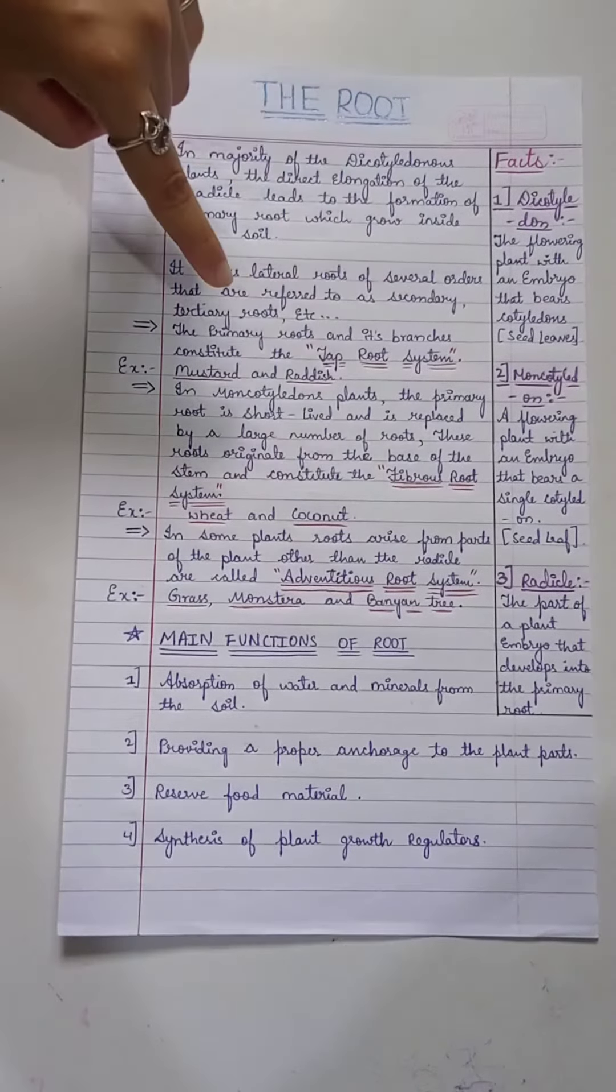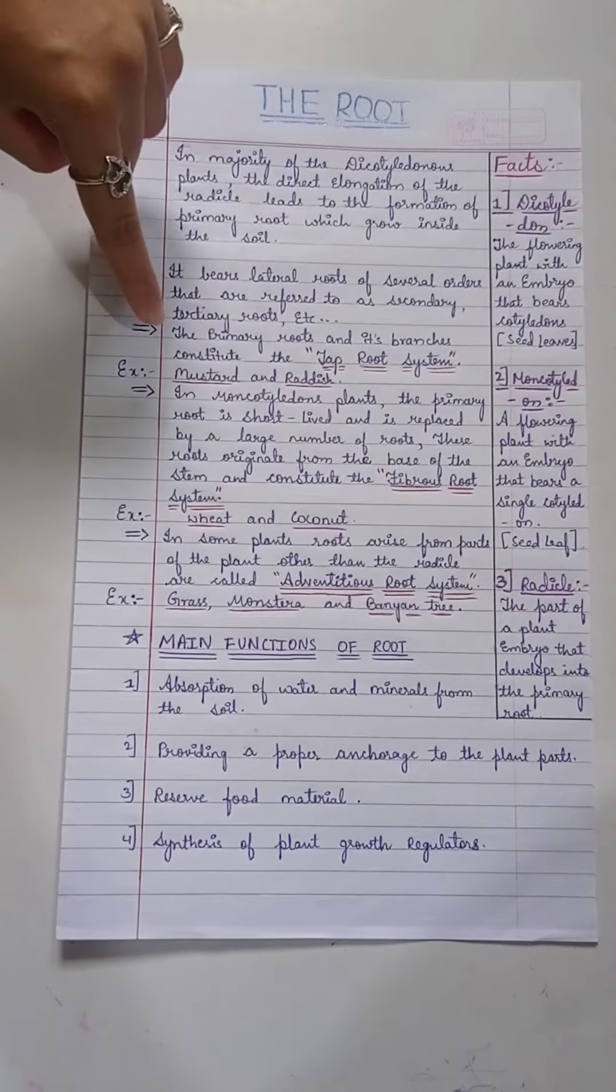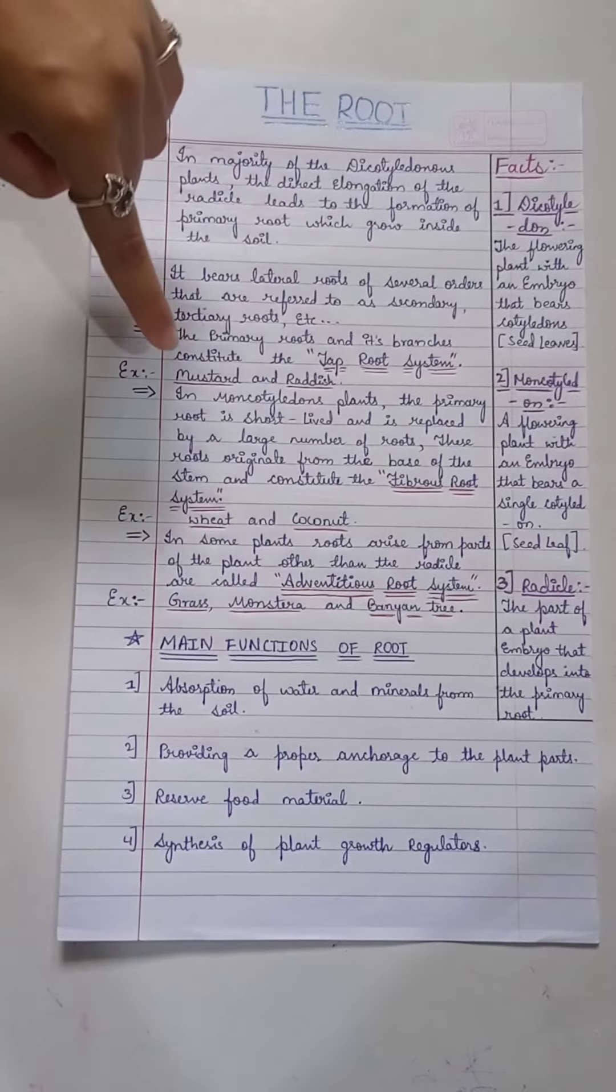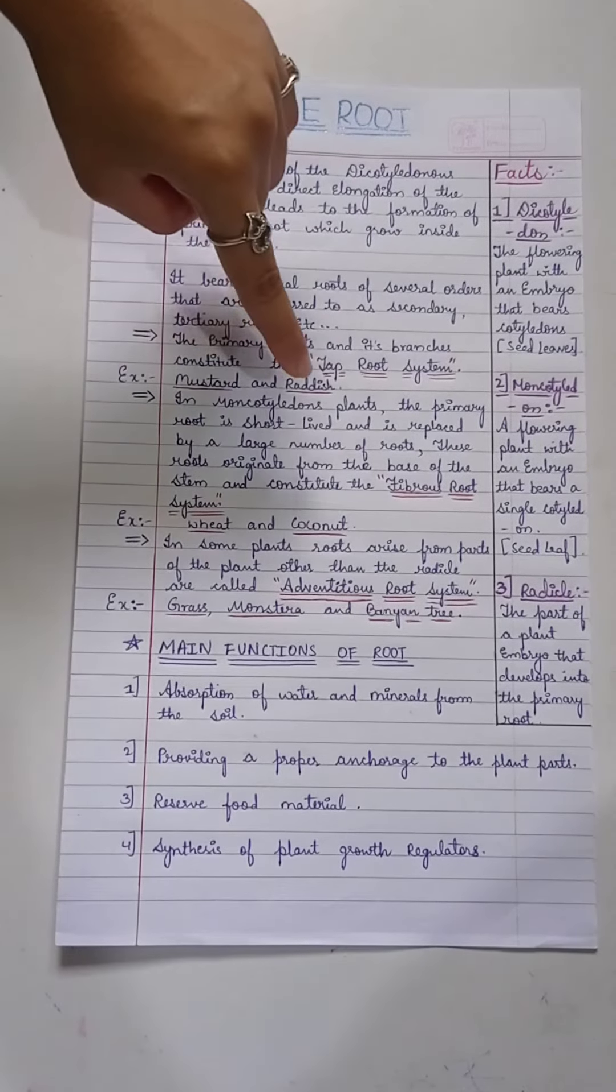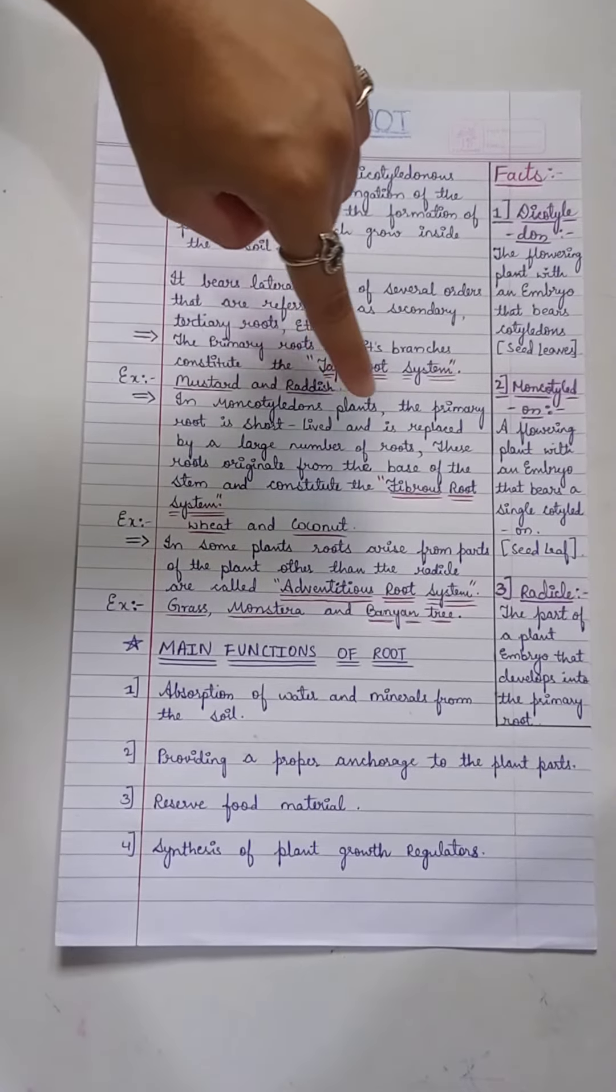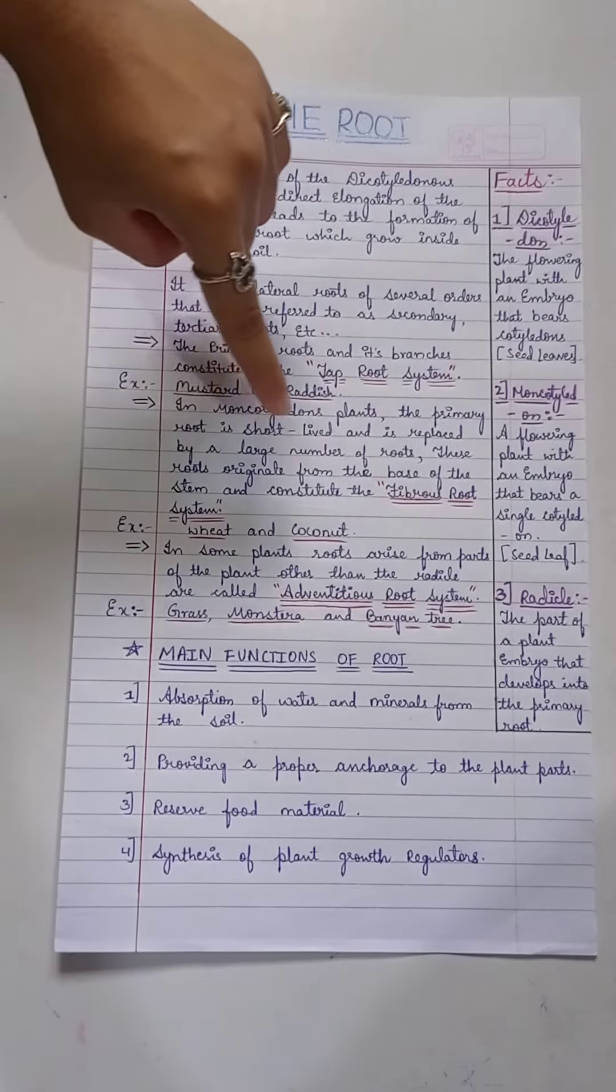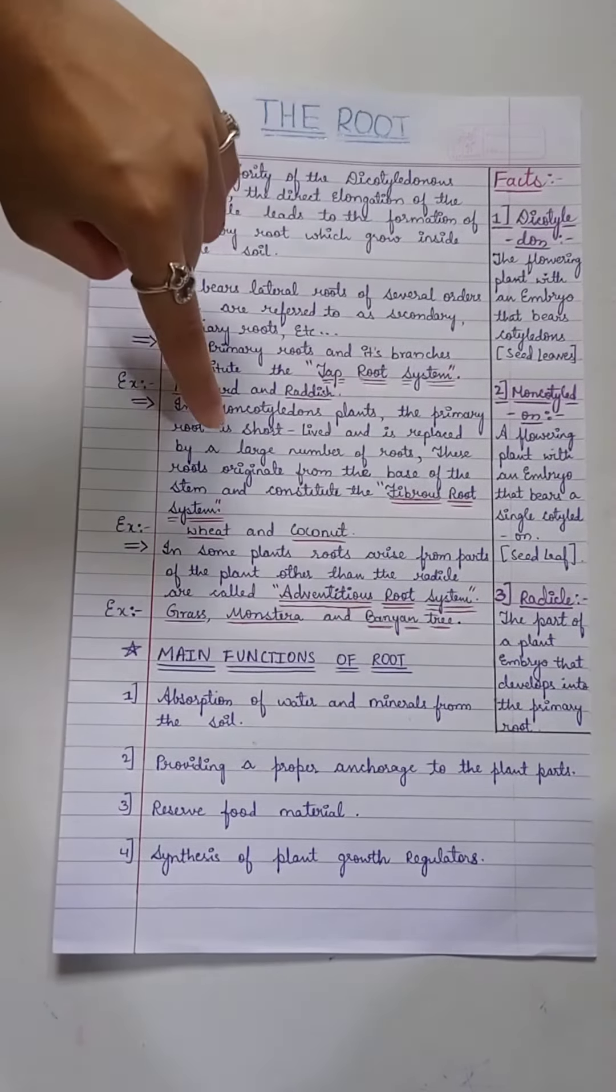In monocotyledon plants, the primary root is short-lived and is replaced by a large number of roots. These roots originate from the base of the stem and constitute the fibrous root system, example: wheat and coconut.